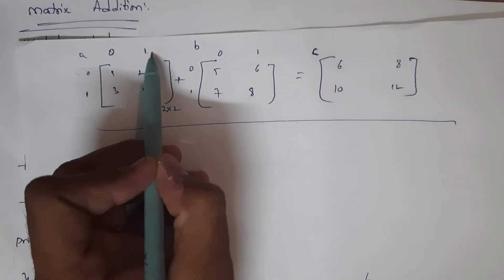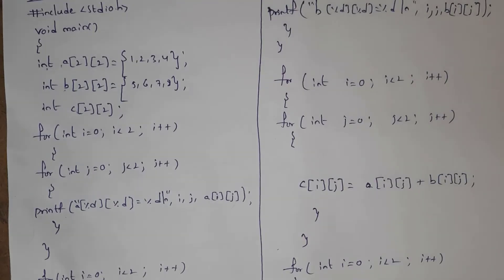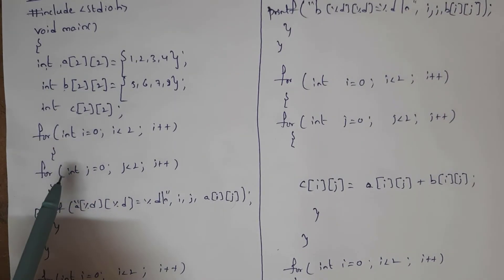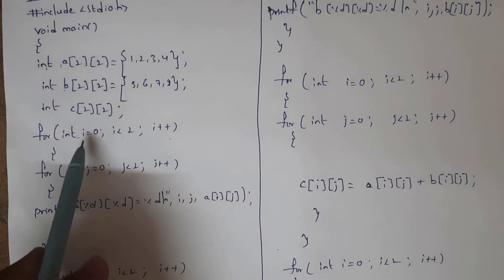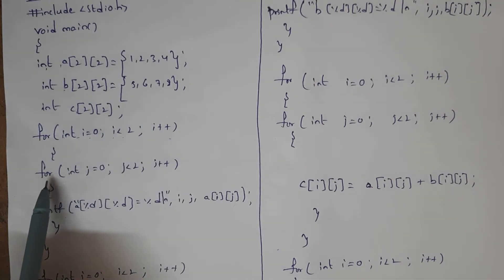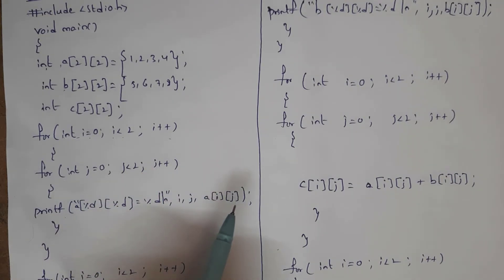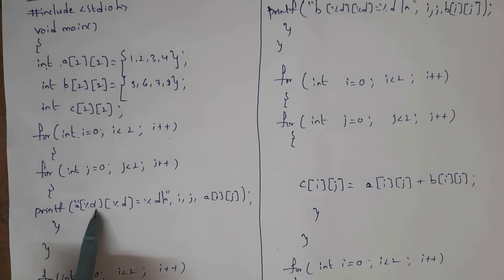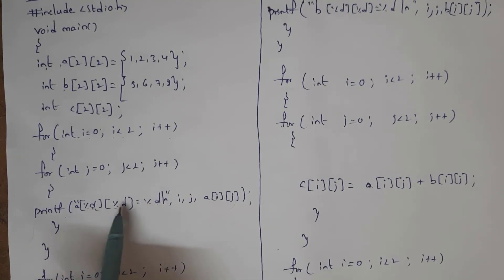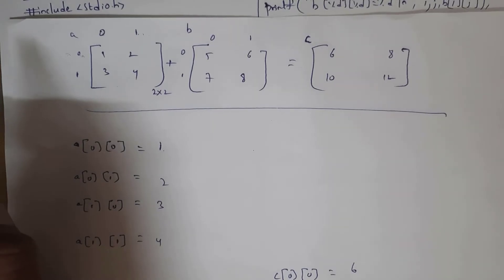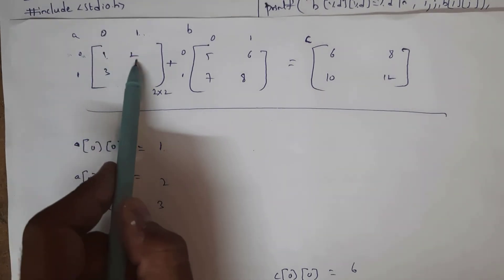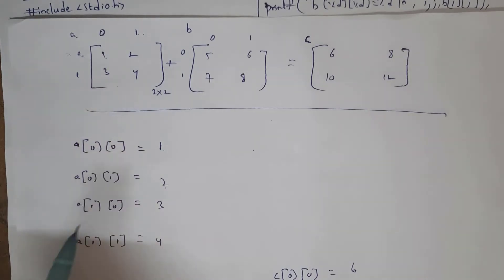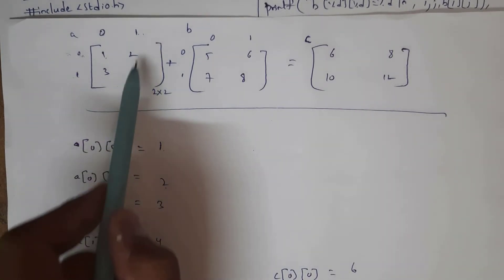Matrix C is also a 2x2 matrix. There are two rows and two columns — rows and columns start at zero and end at one. I took two for loops, one for rows and one for columns, with conditions i=0; i<2; i++ and j=0; j<2; j++. Inside I written printf: a[%d][%d] = %d, passing i, j, and a[i][j]. Output gives a[0][0]=1, a[0][1]=2, a[1][0]=3, a[1][1]=4 — matrix A is printed.